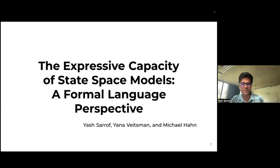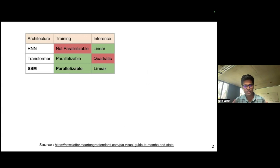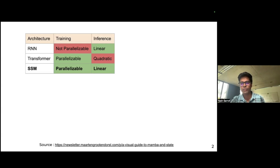The title of the paper is sort of a spoiler — it's essentially all you need to know: we study expressivity in state space models. Because there's such a diverse background, we'll try to break down each thing: what state space models are, what expressivity is, and what we mean by a formal language perspective. SSMs were born out of a need for getting the best of both worlds: RNNs are not parallelizable during training but have linear inference time, while transformers are the opposite. SSMs allow parallelization during training and linear or at least subquadratic inference time.